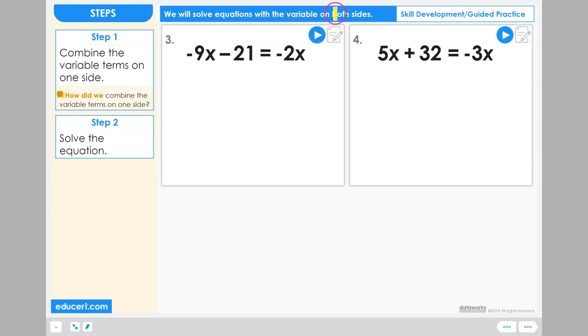Let's solve equations with the variable on both sides. Equation number 3. Negative 9x minus 21 equals negative 2x.